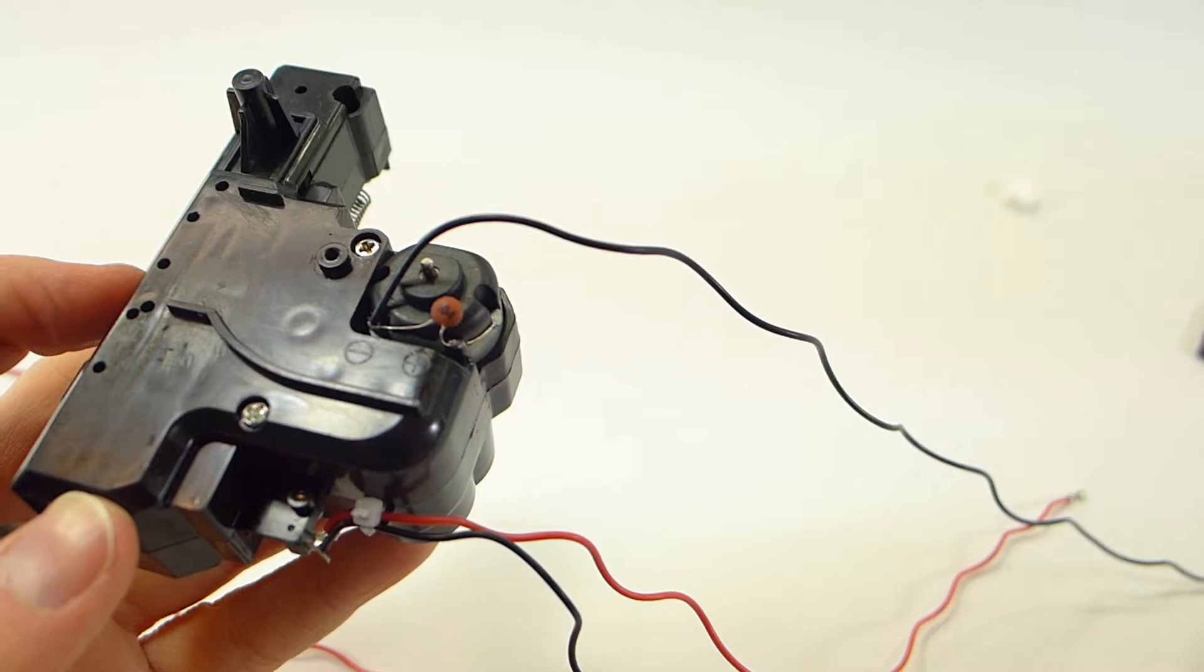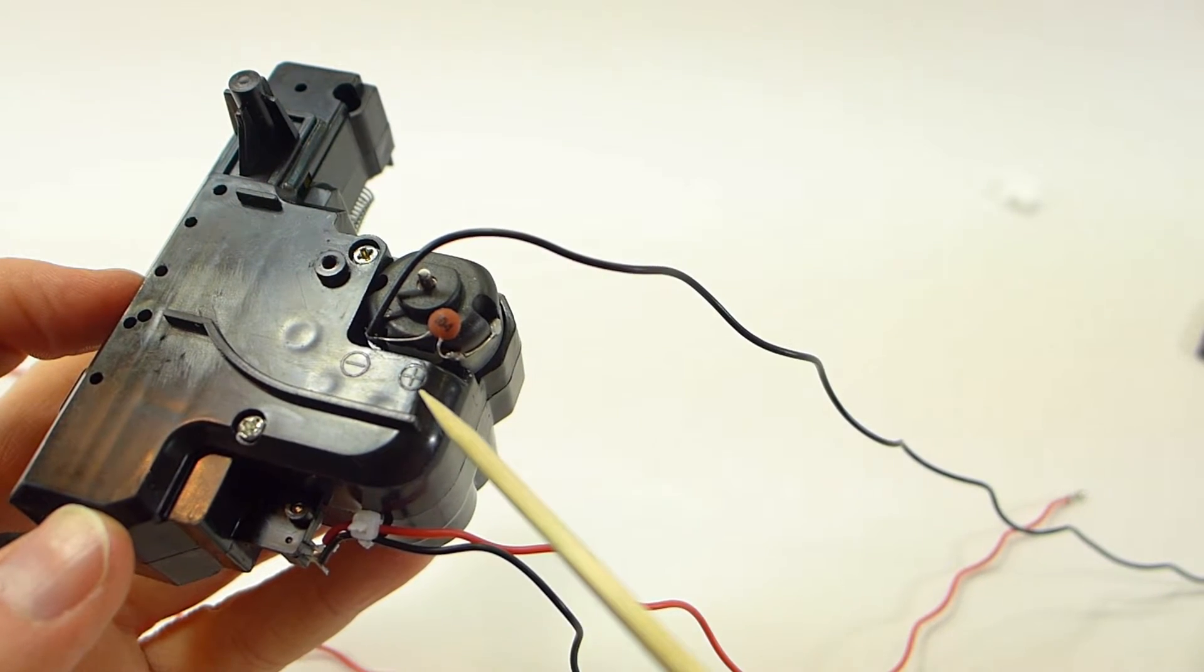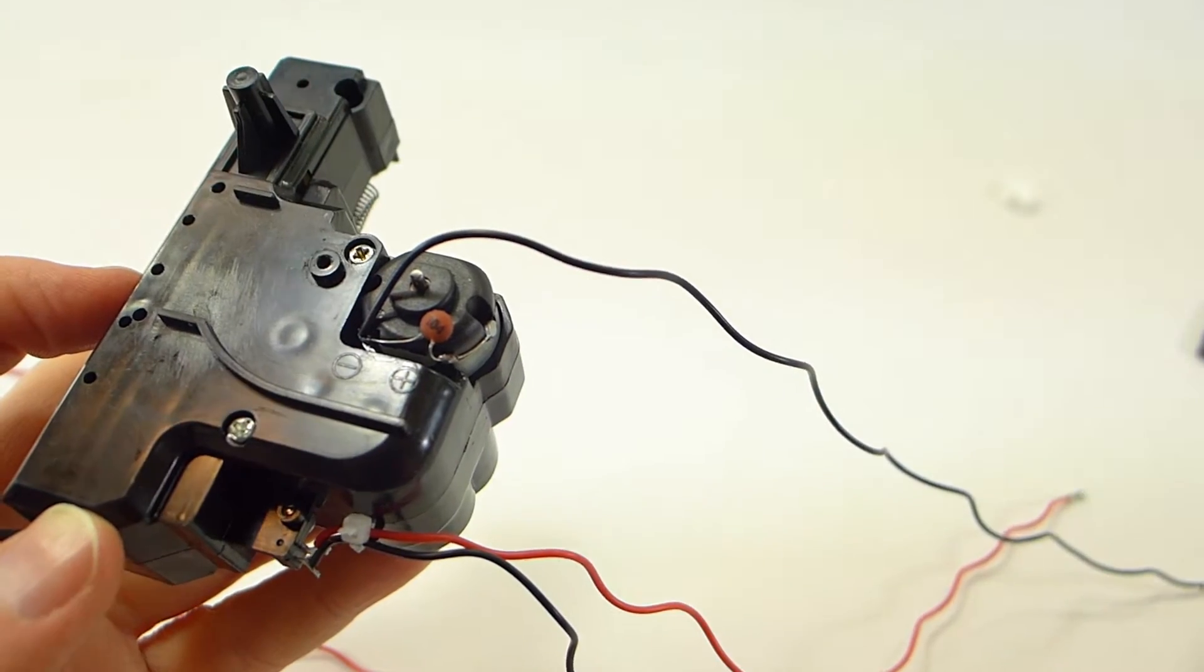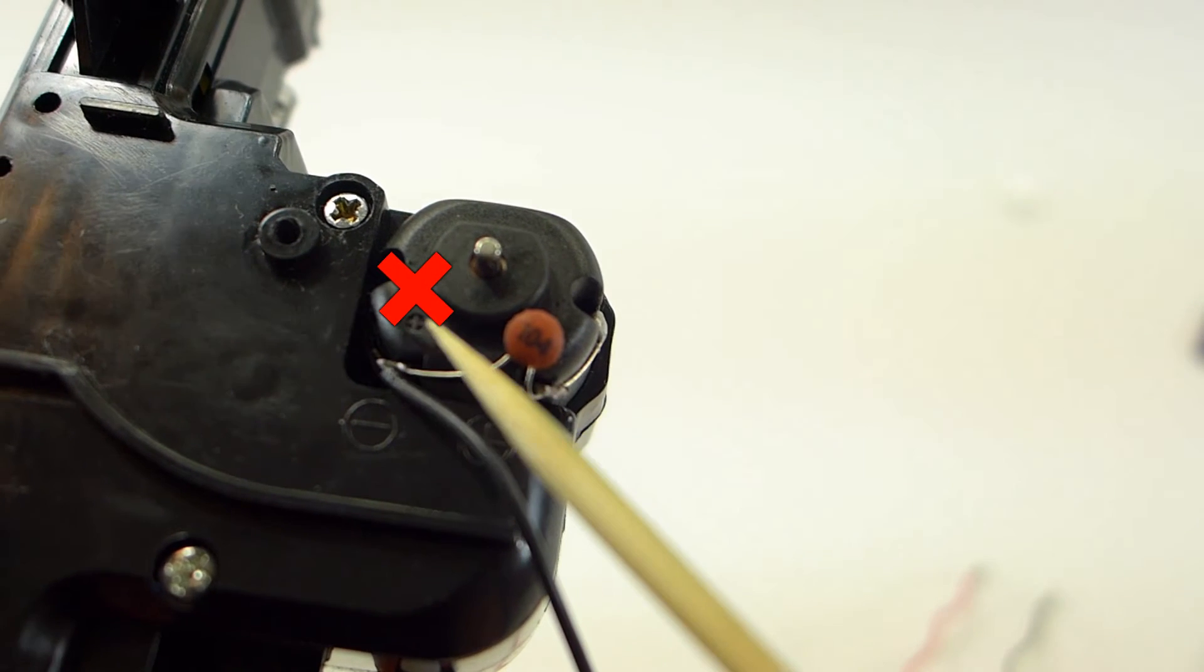Now it's very important that we wire the recoil motor with the correct polarity, and the positive and negative as you can see are molded onto the case of the airsoft unit. There's also you might see a small positive mark on the motor itself.